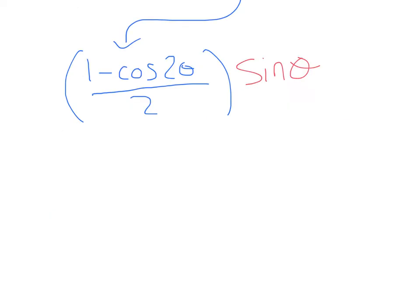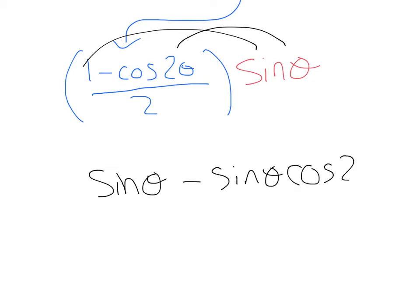Let's go ahead and simplify from there. I'm going to have to distribute this sine theta out. That's going to give me sine theta minus sine theta cosine 2 theta, all over 2. Now, we've rewritten this trig expression. Nothing has any power greater than 1, so we are done.